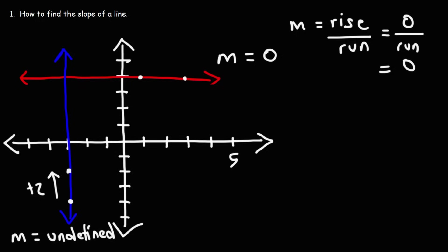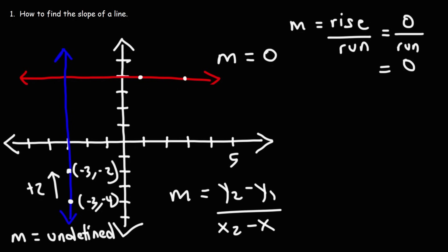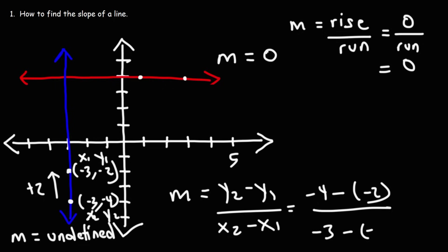Using the second method to confirm: the X values for a vertical line will be the same. One point has an X value of negative 3 and a Y value of negative 4; the other is negative 3 and negative 2. Using Y2 minus Y1 over X2 minus X1: negative 4 minus negative 2 is negative 4 plus 2 = negative 2; negative 3 minus negative 3 is negative 3 plus 3 = zero. Because we have zero on the bottom, it's undefined.